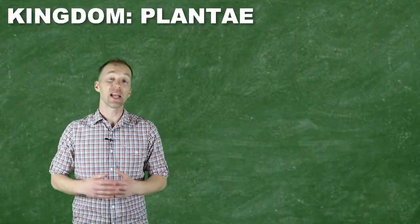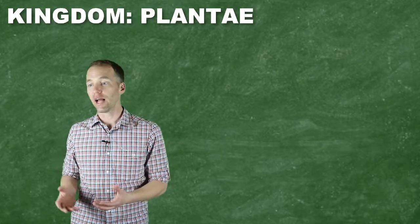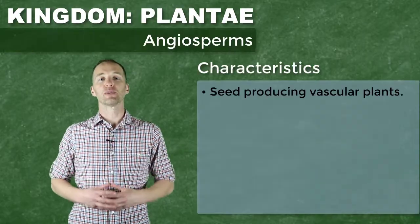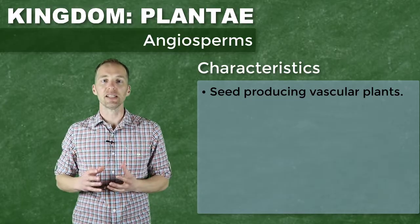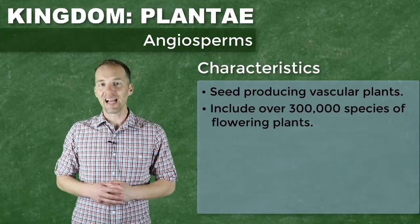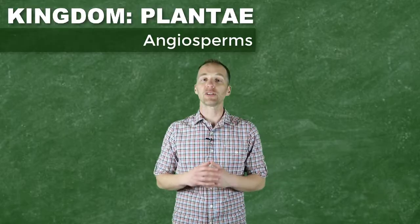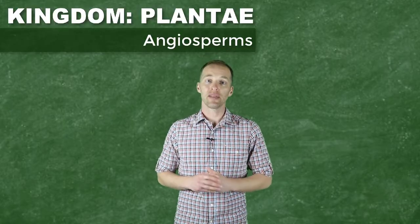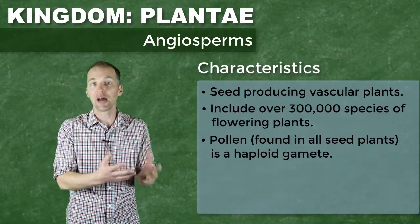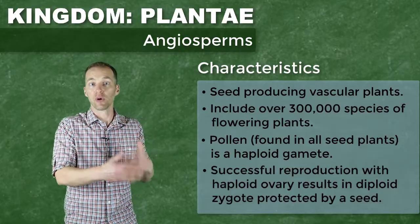Despite the impressive age and size that some gymnosperms have accomplished, the limitations of naked seed distribution and survival have led to an even more successful group — the angiosperms, or flowering plants. Their enclosed seeds have resulted in a group that makes up over 90% of the world's plant species. Pollen is a haploid gamete that makes its way to another plant and fertilizes it, forming a diploid zygote that will eventually develop and grow into another plant.